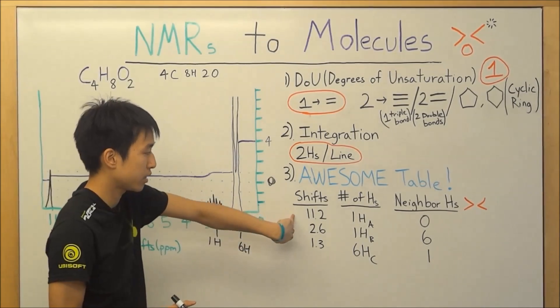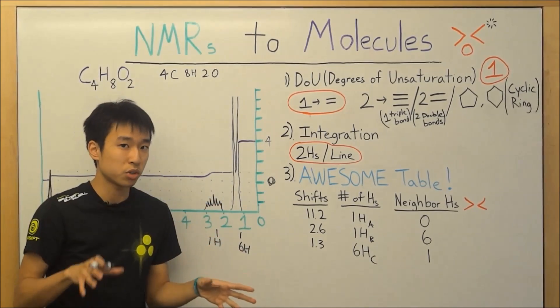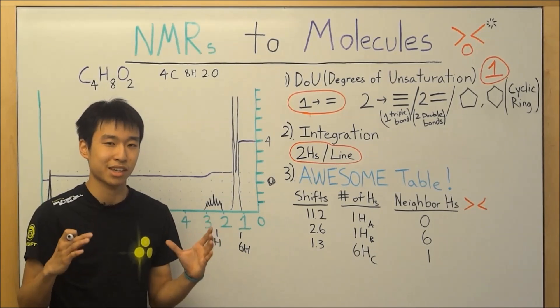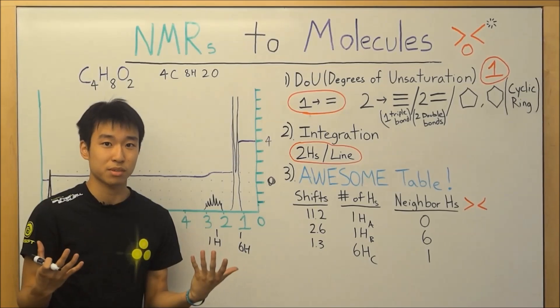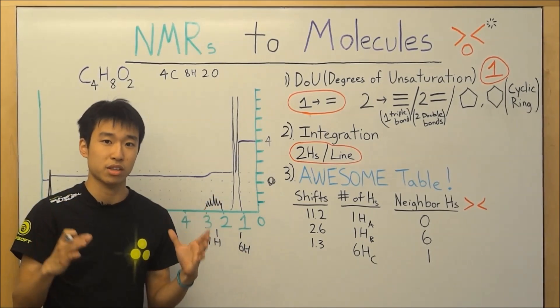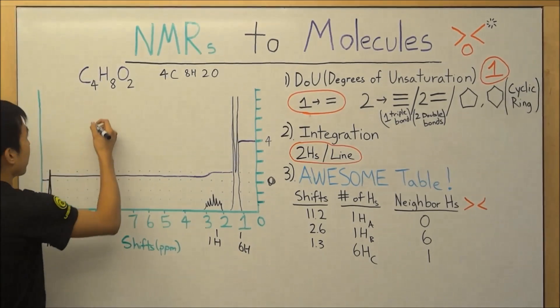If you take a look at 11.2, in your shift table, you should probably only have carboxylic acids or the hydrogen of the carboxylic acids in that range. And that's perfect, because if there's no other hydrogens that are in that range, then we must have a carboxylic acid in our structure. So let's draw that out.